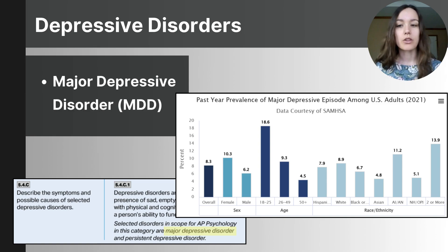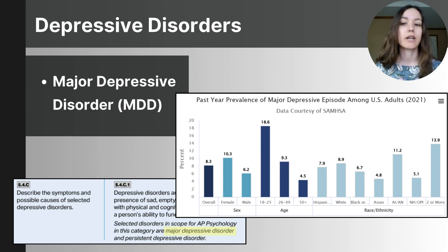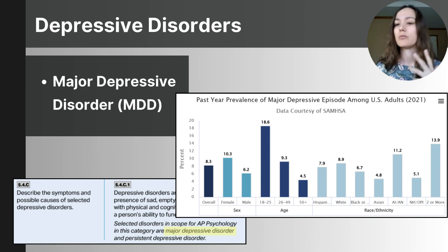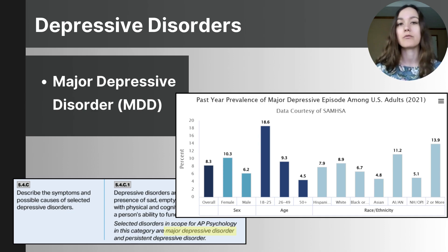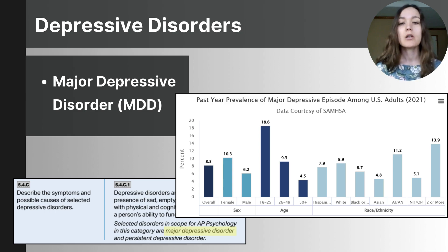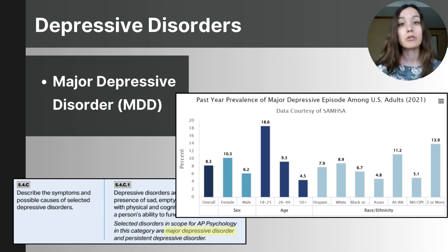The bar graph on screen is published by the National Institute of Mental Health using 2021 national survey of drug use and health data. This study defines major depressive episodes as a period of at least two weeks with depressed mood or loss of interest, along with sleep problems, changes in eating or energy, concentration issues, and low self-worth — consistent with DSM criteria. Findings show a higher rate in females than males and more frequent episodes in young adults compared to older adults. Major depressive disorder is treatable with therapy, medication, and lifestyle changes.